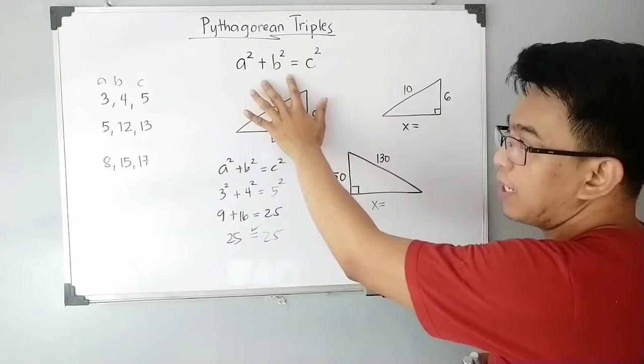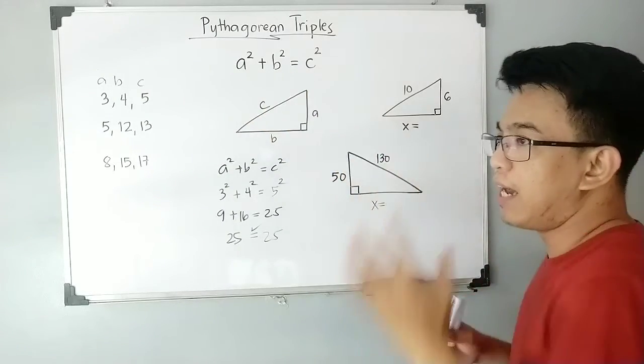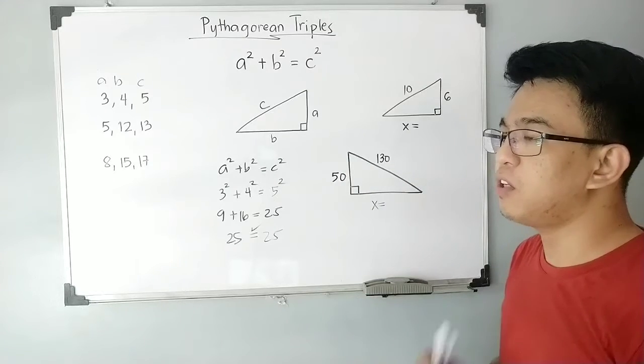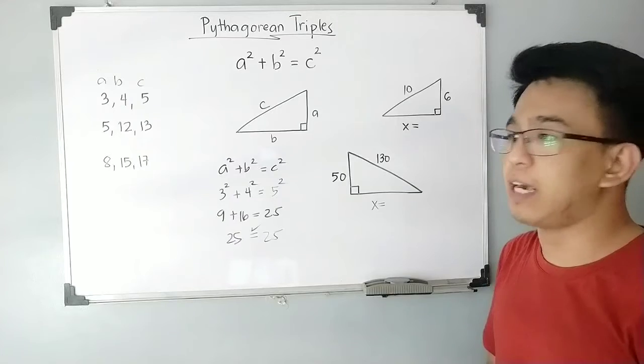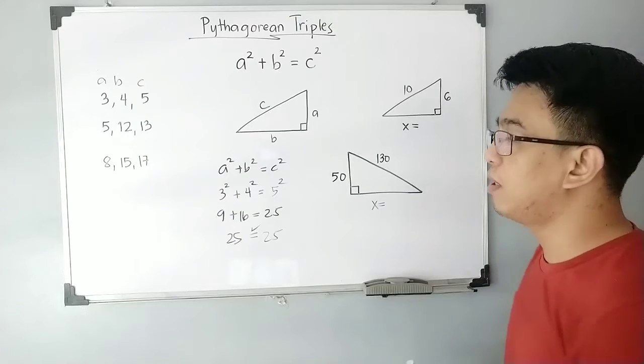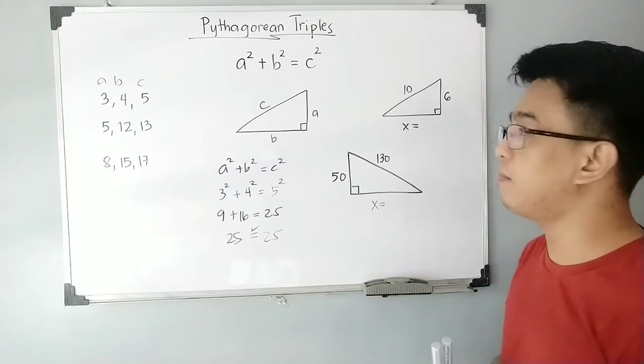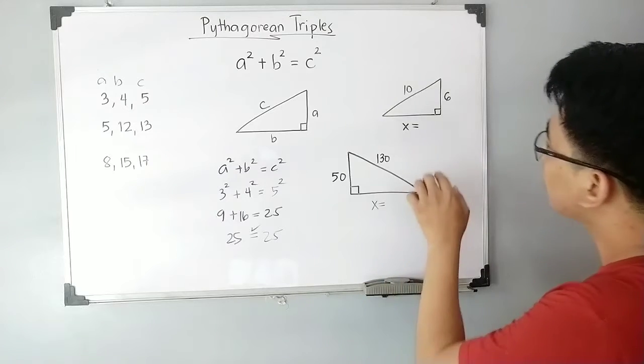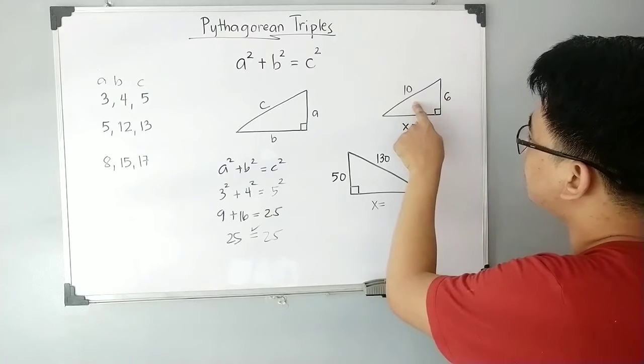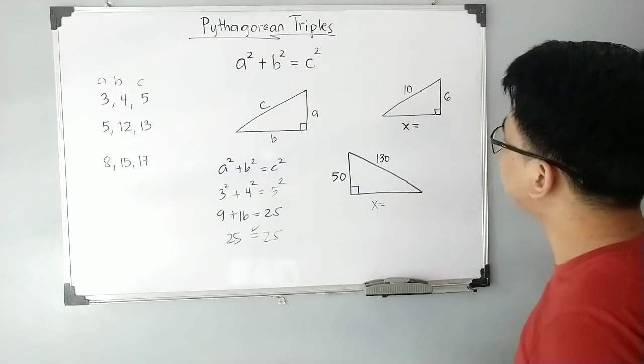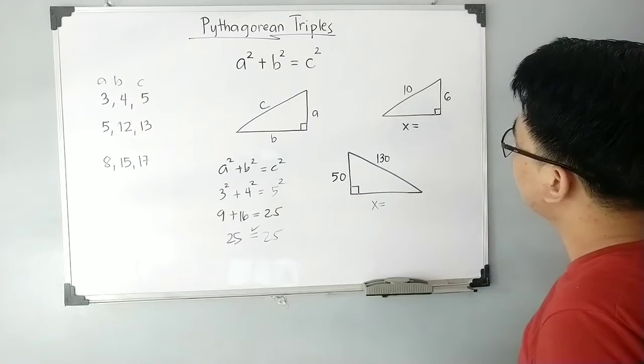If you know the Pythagorean triples—again, I'm not stopping you from using the Pythagorean theorem formula—I'm just recommending that you can use your knowledge about Pythagorean triples to save time in solving math problems. We have here 6 as your leg and 10 as your hypotenuse, and the missing one is the length of the other leg.